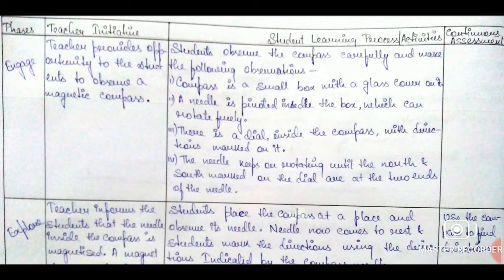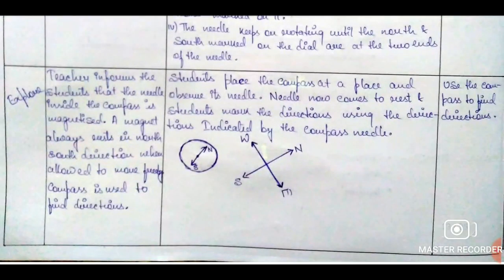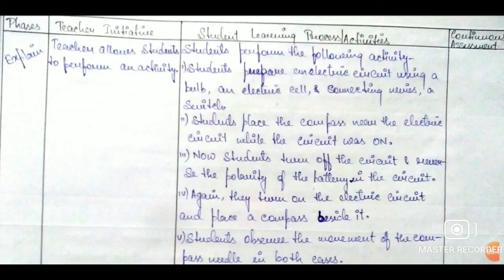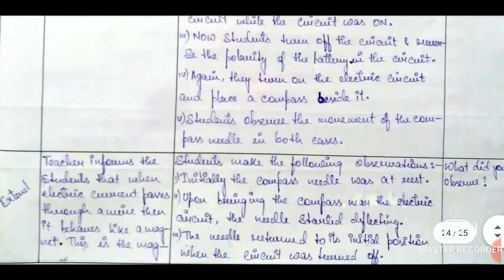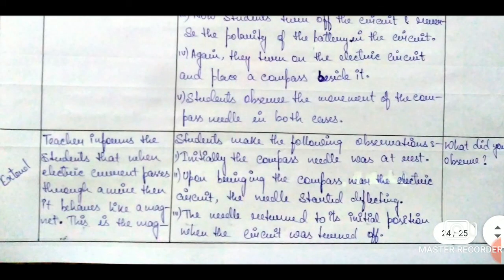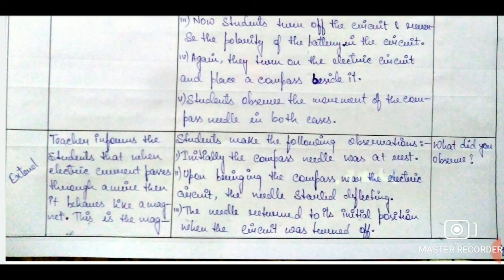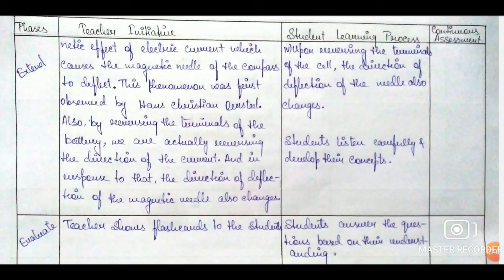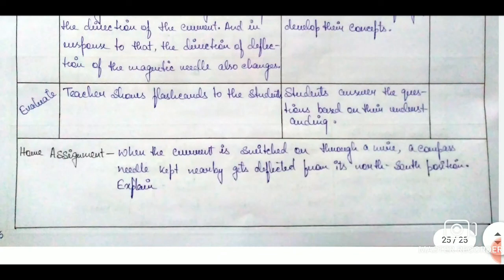Then we move on to our 5E lesson plan table. First is engage, and after engage we move on to explore. After explore we have explain. After explain we have extend, which continues in the next page as well. And then comes evaluation, and finally home assignment.